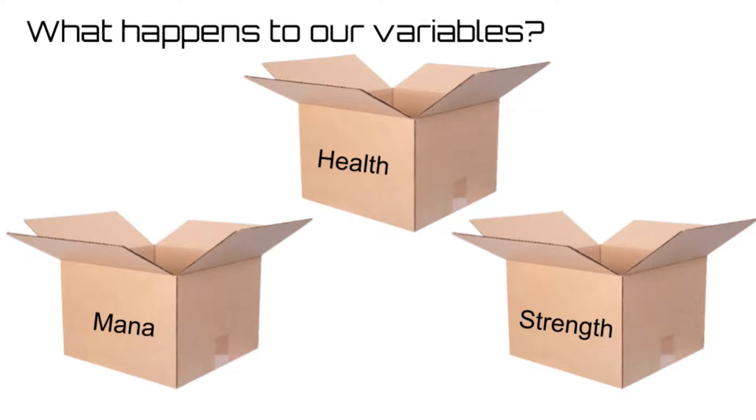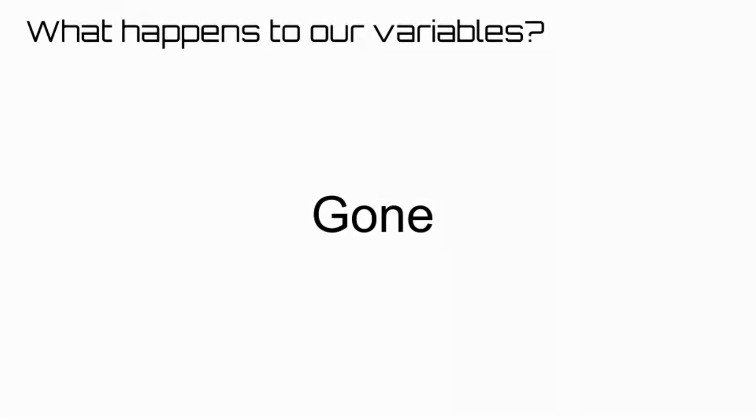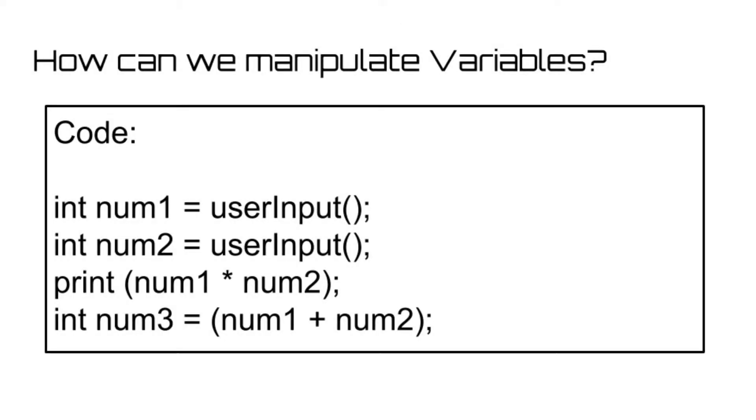Another interesting thing you can do with variables is add them, subtract them, multiply them, and even divide them. Now this mostly only works for integer and float variables, as multiplying and dividing strings really doesn't make too much sense. But if you were making a calculator app, and you stored the first number that the user entered as num1, and the second as num2, you could then multiply num1 and num2 together, and either print them or store them in an entirely new variable entitled result.